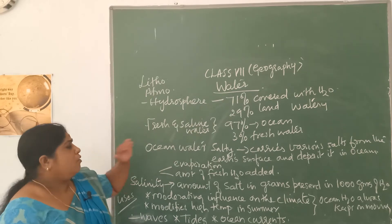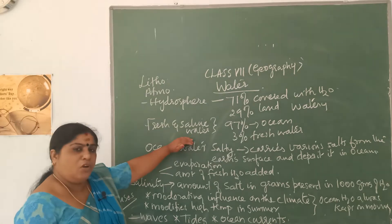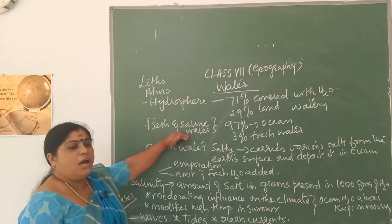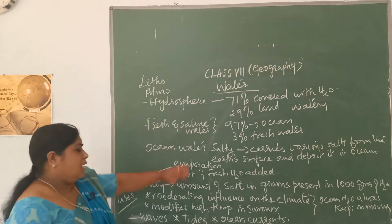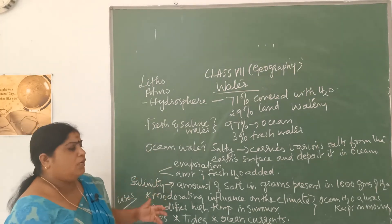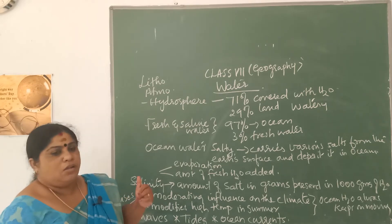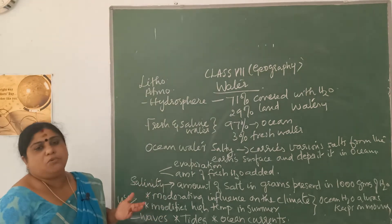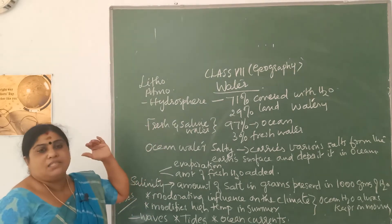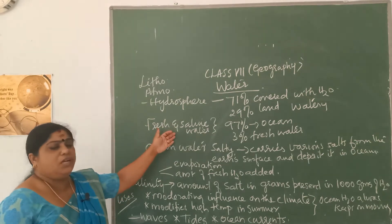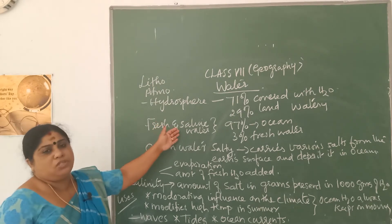You can see fresh water as well as saline water among these water bodies. Salinity means the amount of salt in grams present in 1000 grams of water — how much amount of salt is present. That is called the salinity of water. Ocean water and sea water are saline water, and this water is not useful for our daily life.